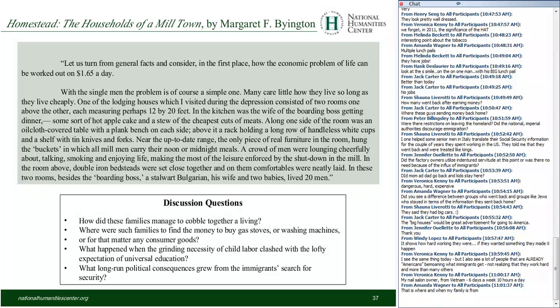The cobbling together of a living, doing without consumer goods, the wretched choice of having to sacrifice one or two children's education in order to have them work and fill in — these are all double-wrenching decisions that parents made in order to build a life on $1.65. Let us turn from general facts and consider in the first place how the economic problem of life can be worked out on $1.65 a day.